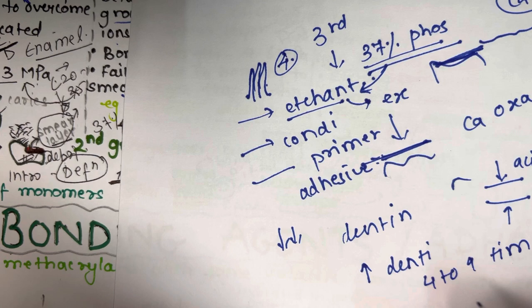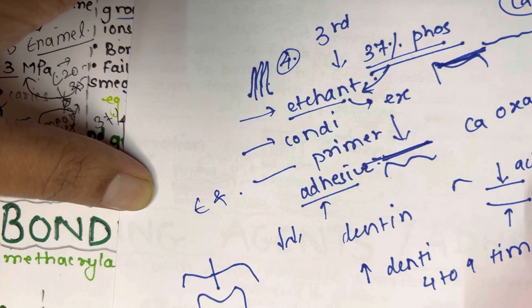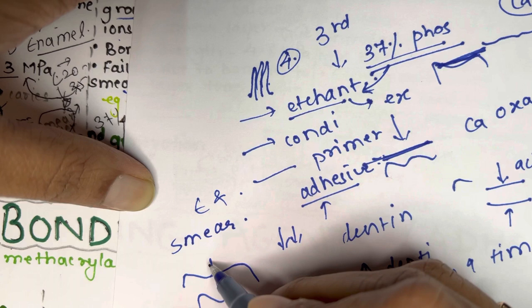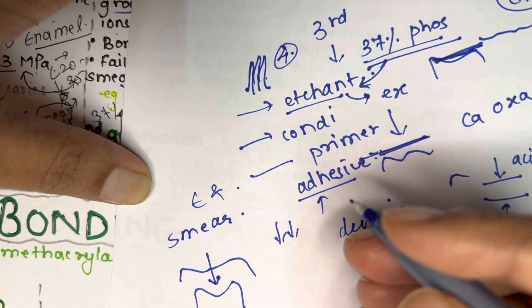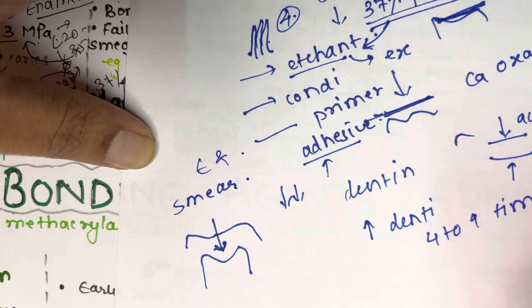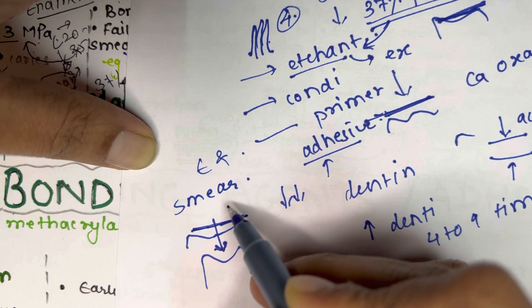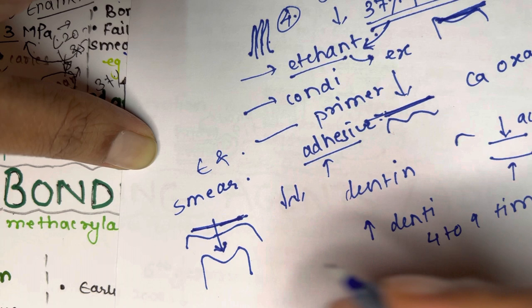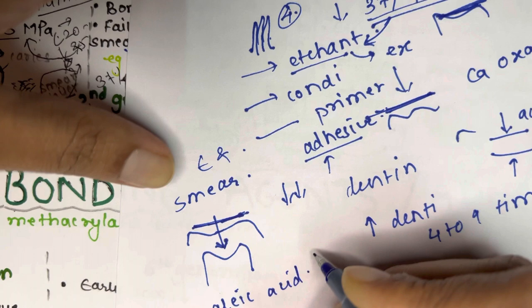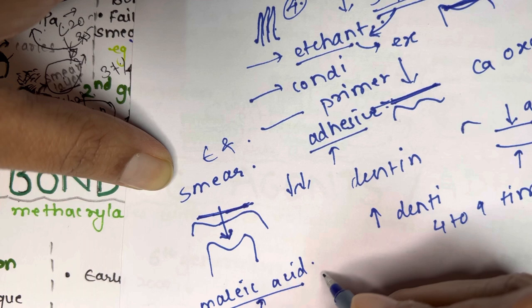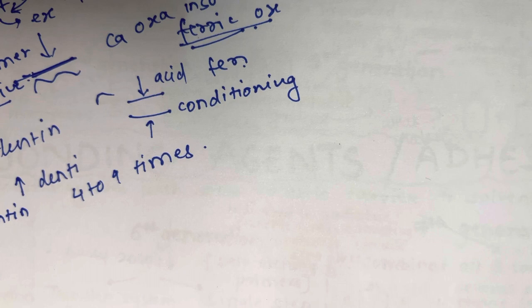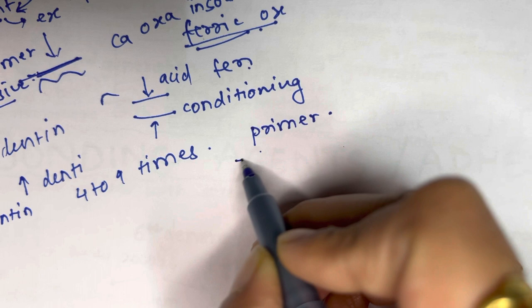Etching of enamel and dentine was contraindicated because it was believed the smear layer protected the pulp by preventing direct contact of the monomer — a strong acid — which could damage the pulp. Therefore, only enamel was etched with 37% phosphoric acid, and a mild agent — the conditioner — was applied to the dentine. The commonly used conditioner was malic acid, applied to the dentine while phosphoric acid was applied to the enamel.